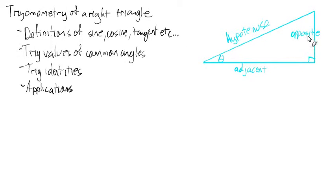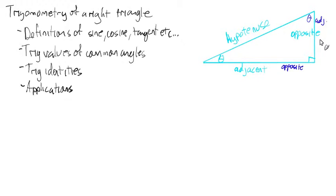So: opposite side across from the angle, adjacent side next to the angle. If I chose this angle — let's do a little color coding — this side would be opposite that blue angle, and this side would be adjacent to that dark blue angle. You can see how all that lines up. Let's undo that and use light blue to avoid any confusion.